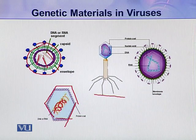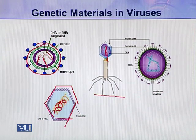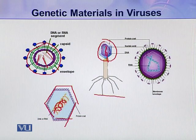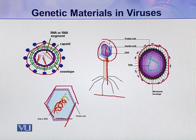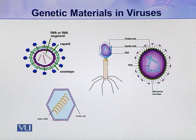This is a bacteriophage. In a bacteriophage, a single molecule of nucleic acid is wrapped by a capsid which is called the head, and this is the tail. The tail and head are made up of proteins. Similarly, in this virus, this is the protein coat which is also called capsid, and inside the capsid there is a single molecule of nucleic acid. So these are very simple types of organisms.